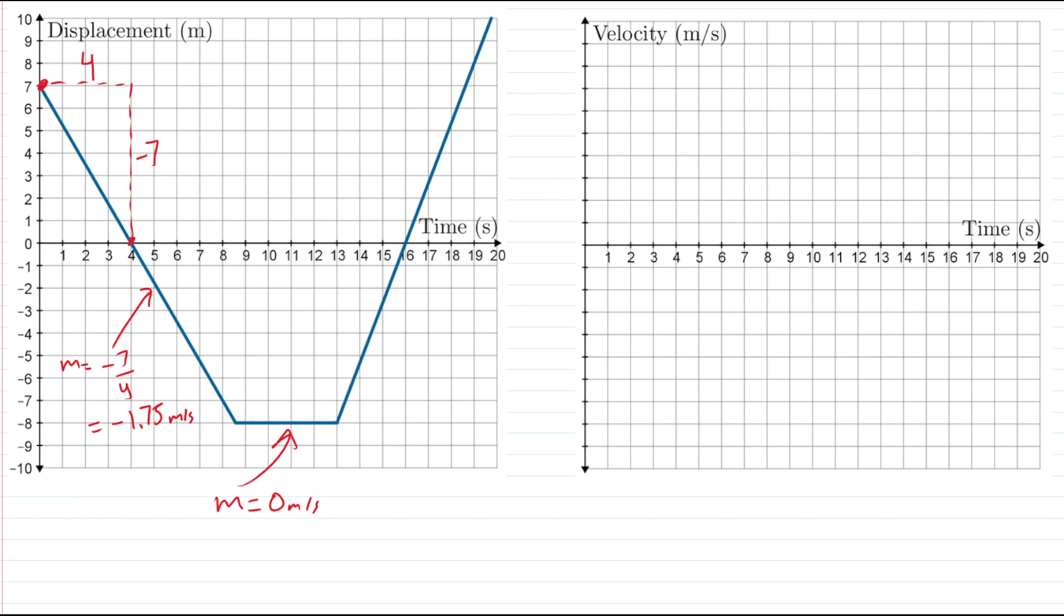And for the last piece here, why don't we use maybe this point here and this point here. We'll draw that little triangle just like that. We have a rise of eight and a run of three. So for this part here, we have a slope of eight divided by three, which is approximately 2.7 meters per second.